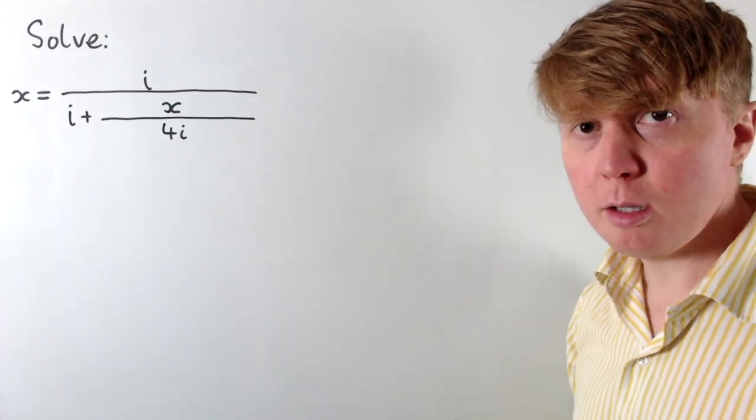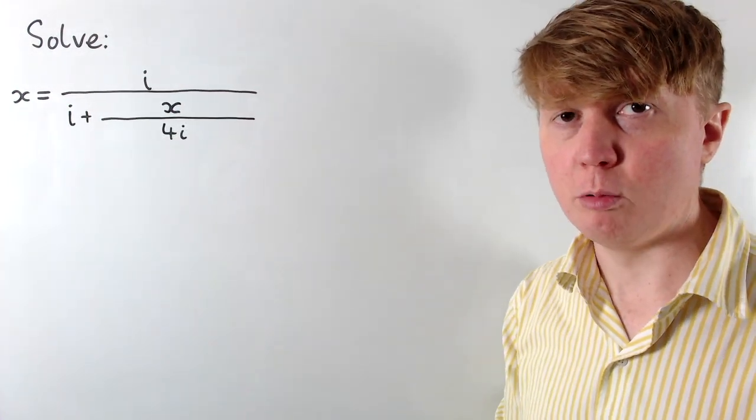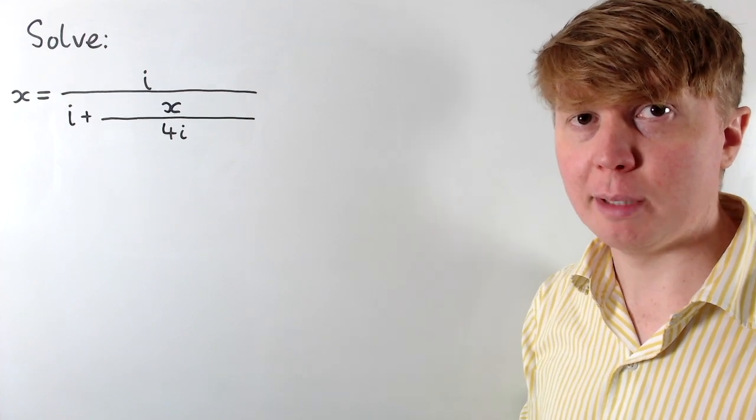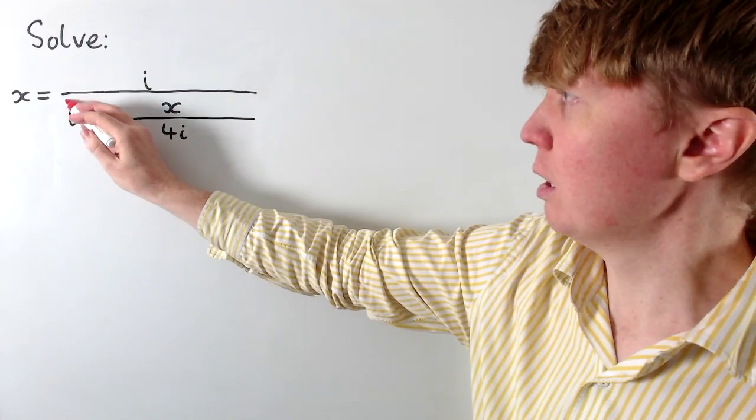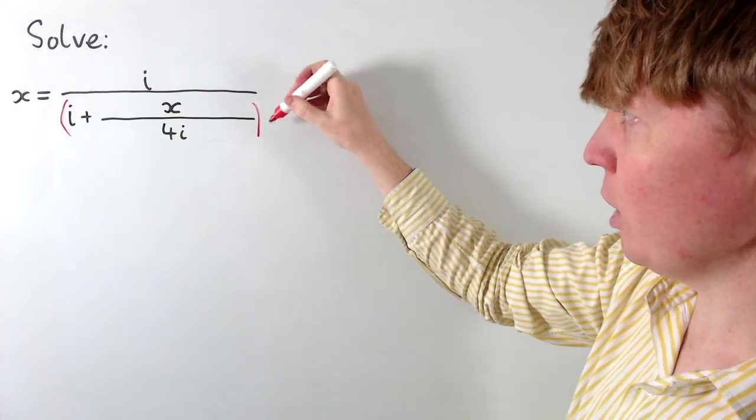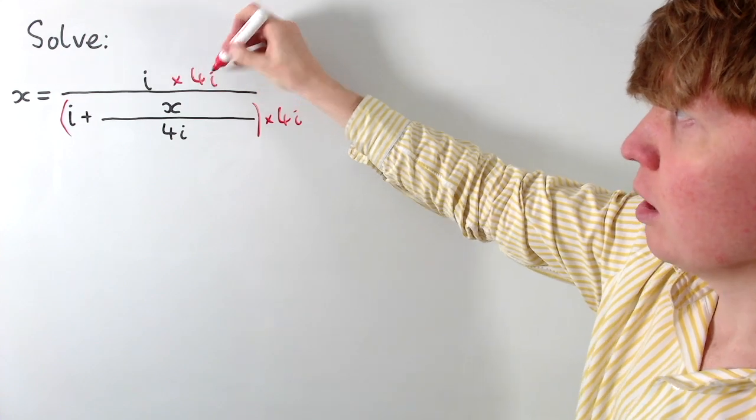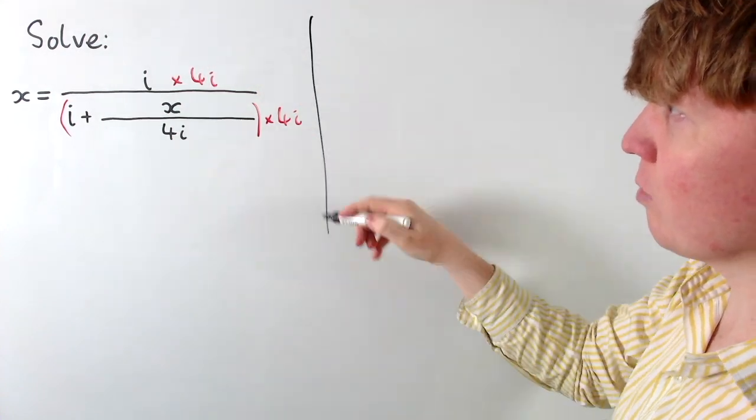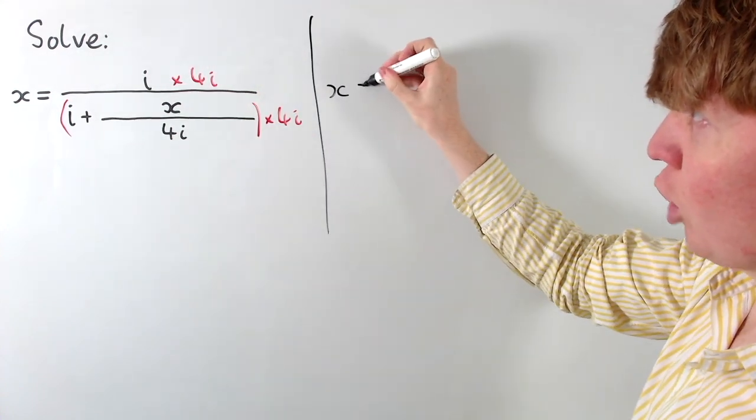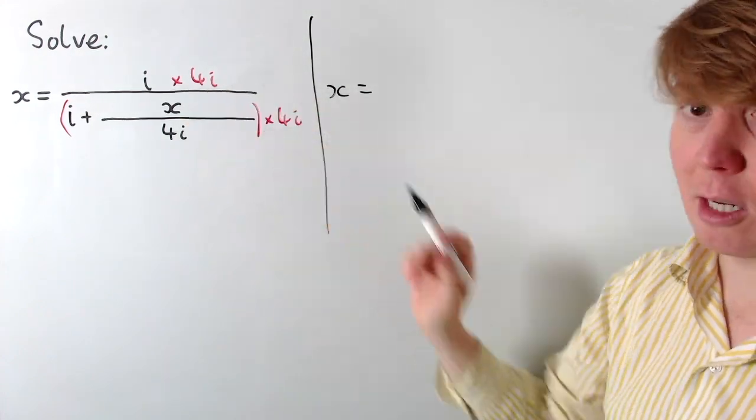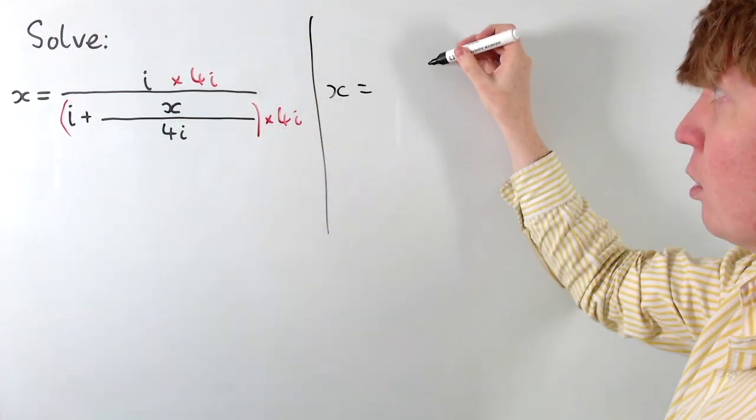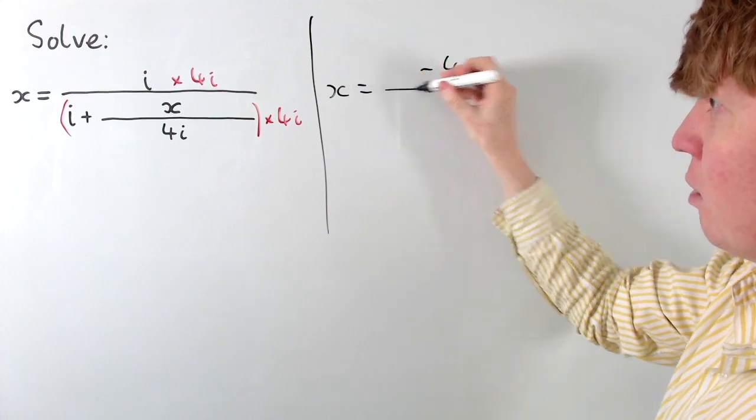Now if we consider the big fraction on the right-hand side, we could multiply in the numerator and denominator by 4i to get rid of this fraction in its denominator. So if we multiply everything here by 4i, we also need to multiply in the numerator by 4i. So this gives us a new equation, we've still got x equals, and then 4i times i just gives us negative 4, because i squared is negative 1.